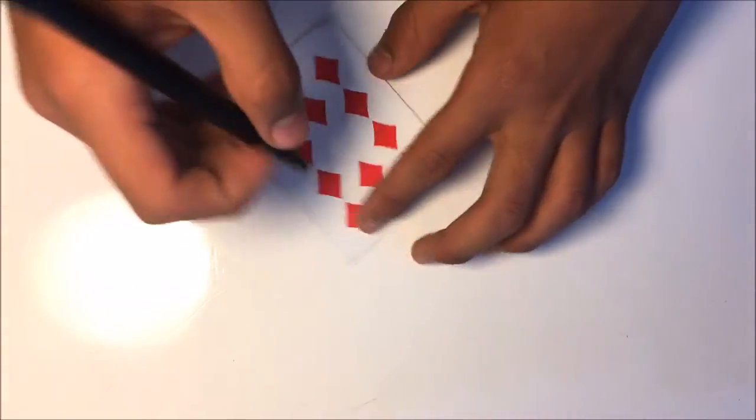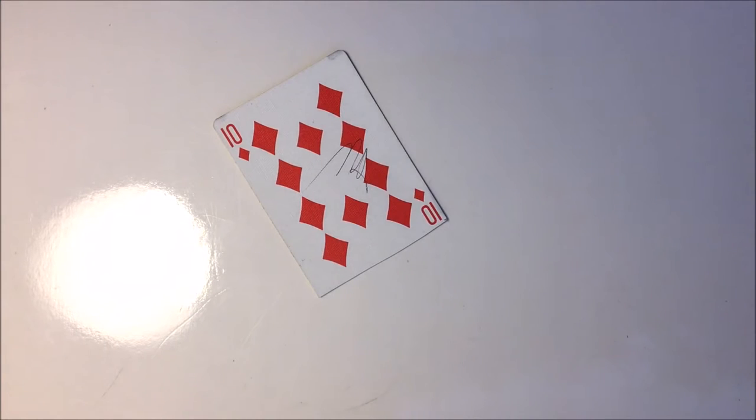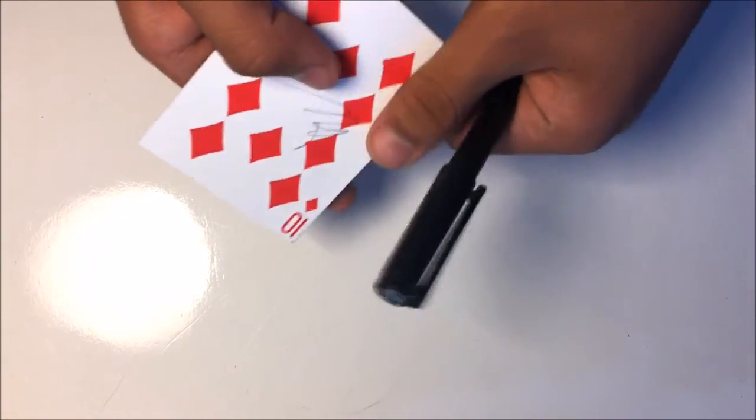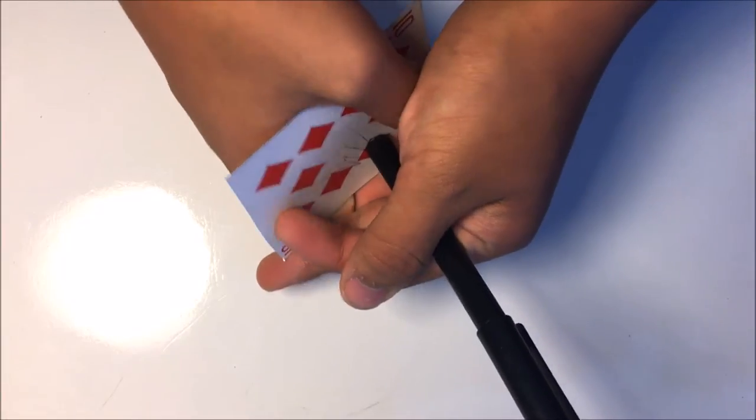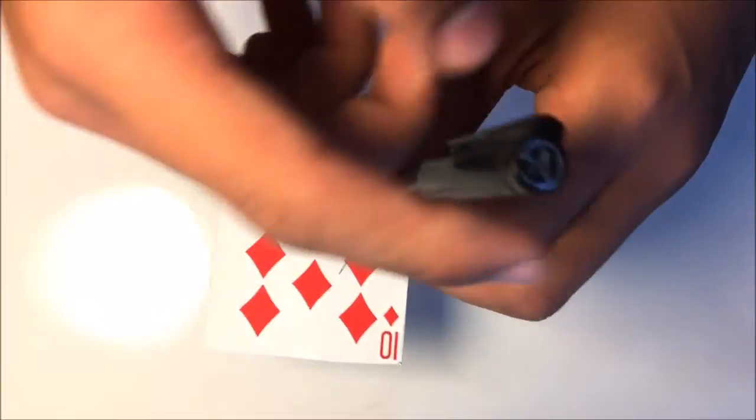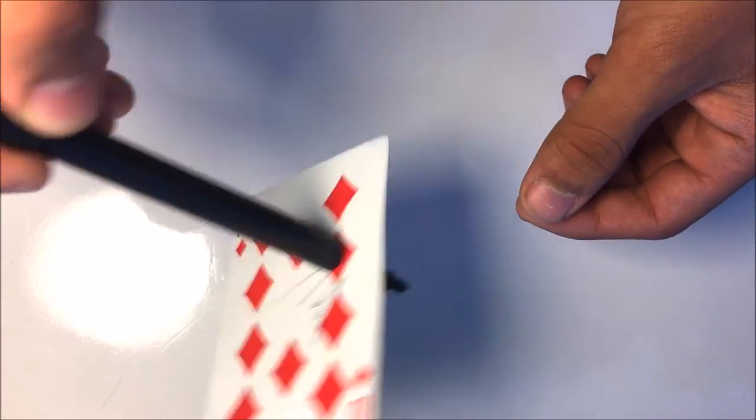Next, you give the spectator a pen and they sign the card with their signature. Then, you take the card and you take your pen back and then you stab the card with the pen. And they can actually see it and you can visually see the pen has gone through the card.